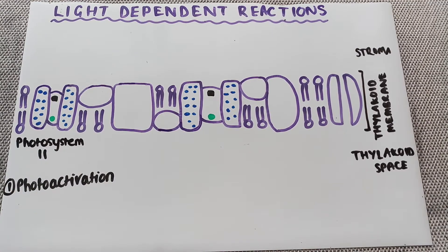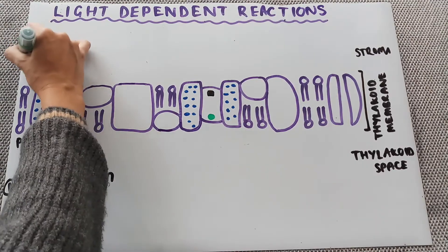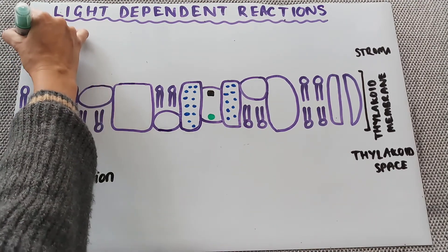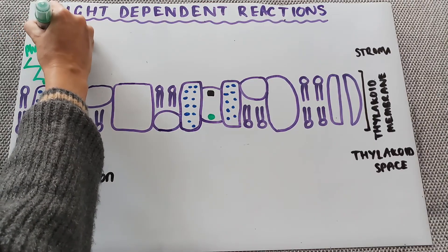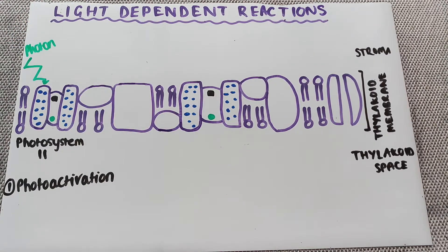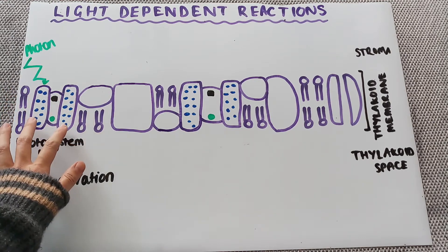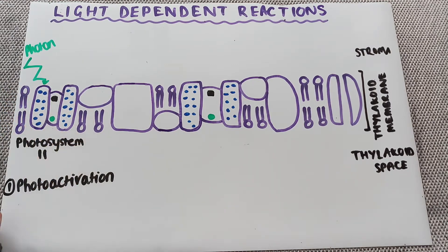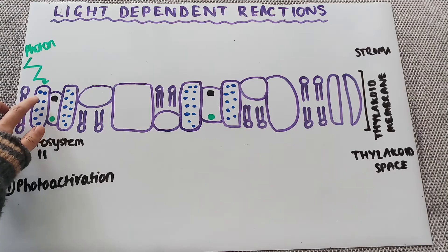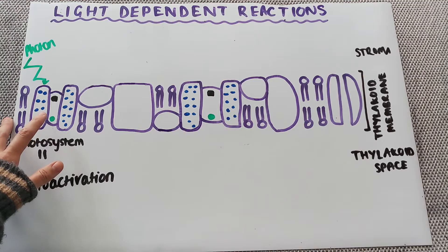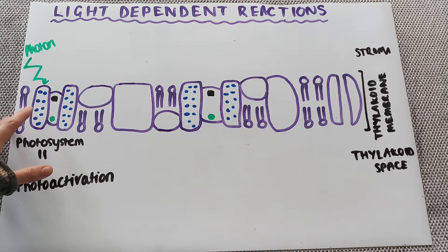Photo activation is the process of a photon of light coming in to photosystem 2, being absorbed by an accessory pigment. The photon gets transferred between all of the different accessory pigments until it reaches chlorophyll A at the bottom. So this is photo activation.